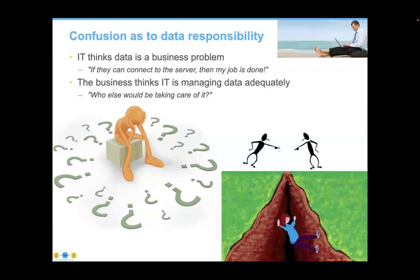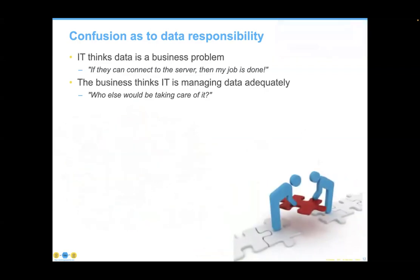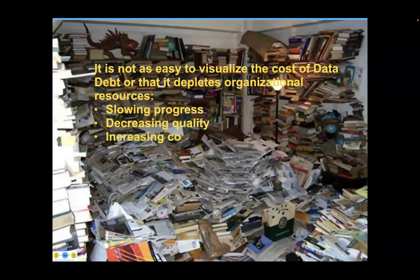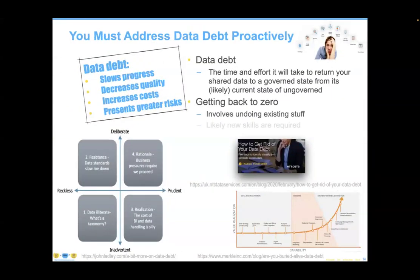There has been confusion about data in major ways. IT thinks data is a business problem — if they can connect to the server, their job is done. Business thinks IT is managing the data adequately. CIOs have tremendous responsibility, and data has typically been just one of many. We have a new class of data leaders called chief data officers who are still figuring out their groundwork. As a result, data has slipped into a gigantic chasm between business and IT.